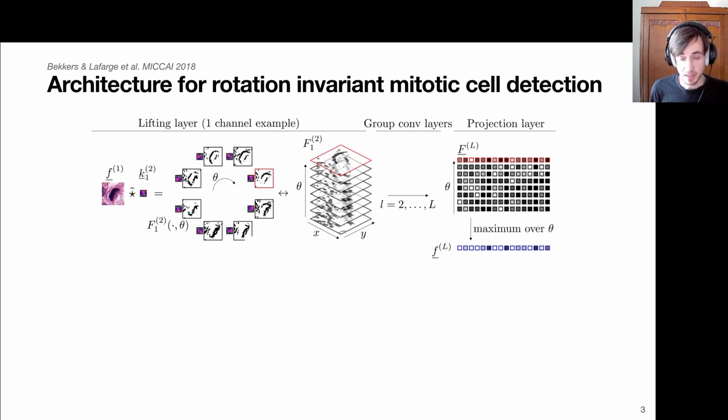These are actual results obtained with a neural network trained on the data. Suppose we have an input patch - it's an RGB image. We use this underline to indicate this is a vector valued feature map. We can apply our lifting convolution as parameterized by a convolution kernel. What you see here is an actual convolution kernel that we learned.